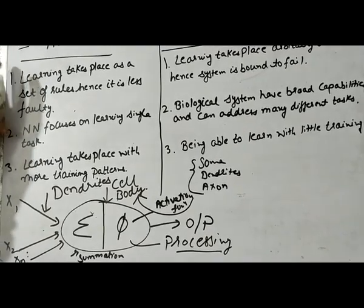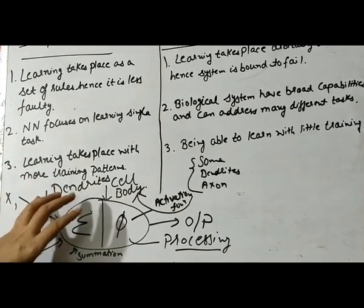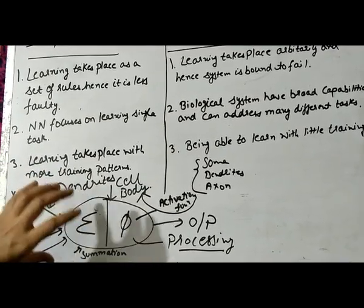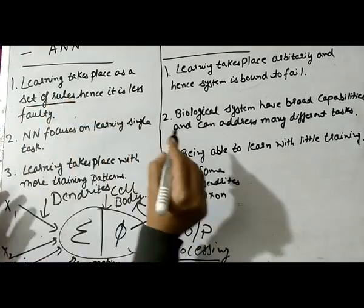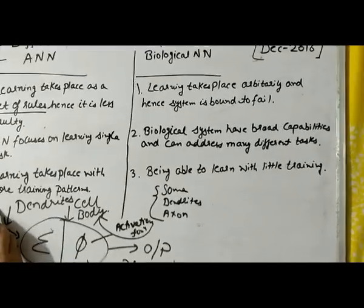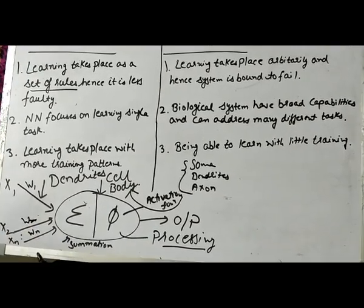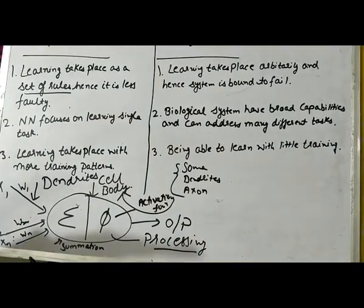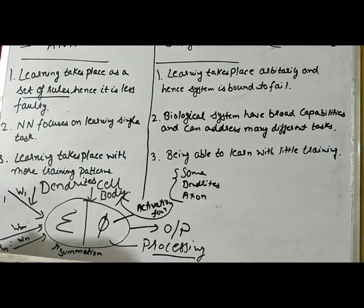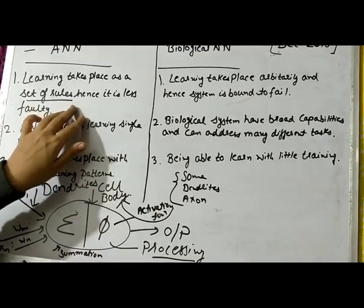The first key difference is that in an artificial neural network, learning takes place as a set of rules. You have to provide inputs and corresponding weights step by step, and then learning proceeds. In contrast, in the human brain — the biological structure — whatever learning happens is arbitrary. You don't follow a fixed step-by-step process, so there are fewer chances of being faulty in ANN.